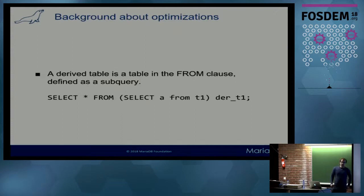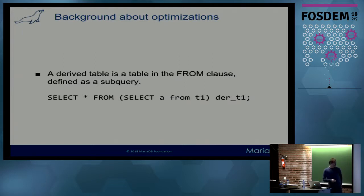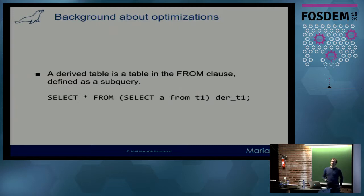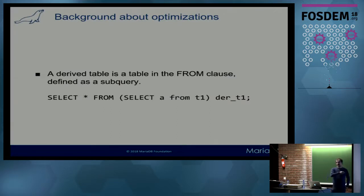In order to explain the recent optimization developments, I need a bit of background. A derived table in MySQL is any sort of table which you can find as part of a subquery in the FROM clause. Whenever I say derived table, it's either this or a view as part of the FROM clause — a view is basically the same thing.